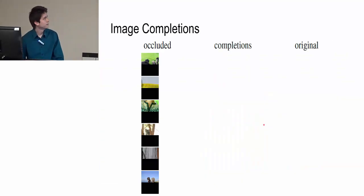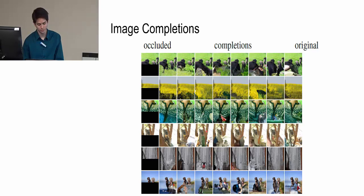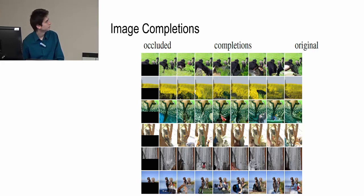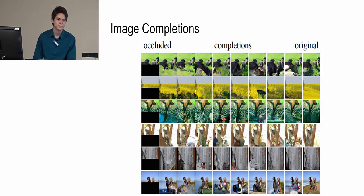Another cool capability of Pixel RNNs is completing images that are occluded, because it comes naturally when you model the direct distributions of each pixel. Here are some occluded images, and when we send them through the model it outputs completed versions that look pretty good and are very varied with different results. It looks like they complete textures well — grass, trees, snow, water. Here are the originals for reference. And that's it for the presentation. Thank you.